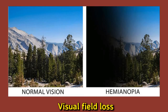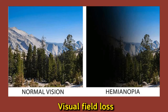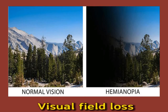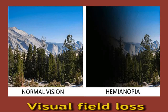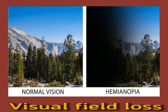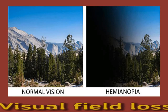Sometimes visual field loss may cause a blind spot, or scotoma, that affects one or both eyes. This issue may also occur in the center of the visual field; in such cases, looking at an object may make it disappear from the field of view. In some people, visual field loss may occur at the top or bottom of the eye, resulting in the loss of the upper or lower area of the field of vision.